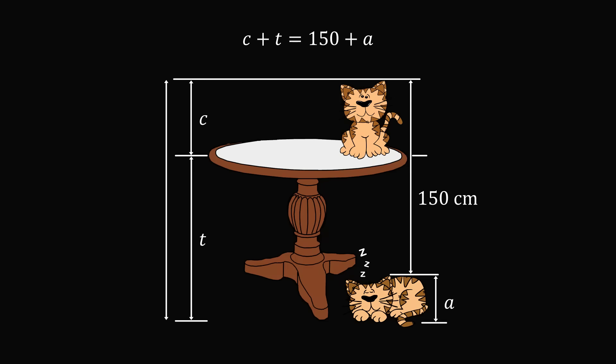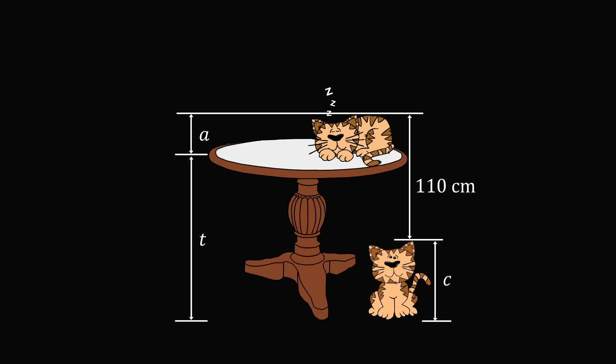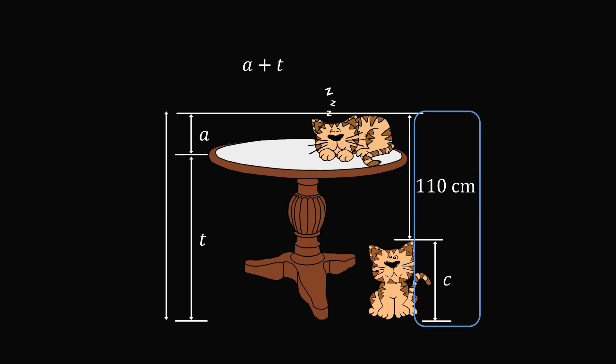Now let's analyze the other diagram. Here we have the same table, but the positions of the sleeping and sitting cats are exchanged. Between the two diagrams, the unknowns have the same values: t for the table, c for the sitting cat, and a for the sleeping cat. We can now measure the distance from the floor to the top of the sleeping cat in two ways: on the left side it's a plus t, and on the right side it's 110 plus c. So our second equation is: a + t = 110 + c.